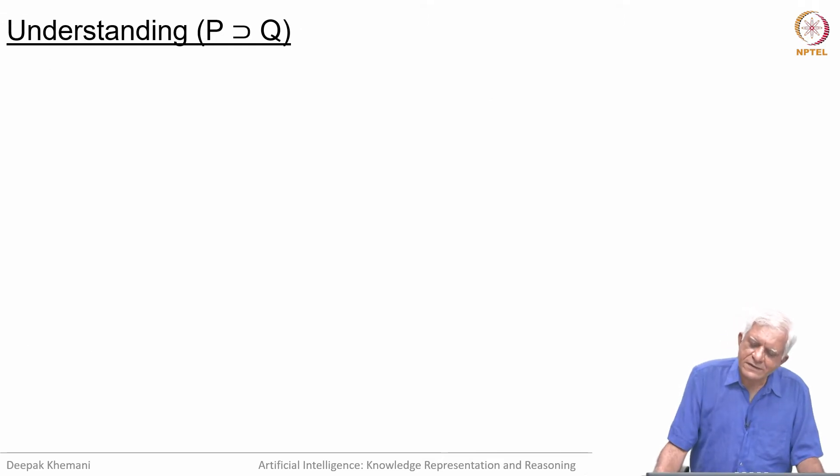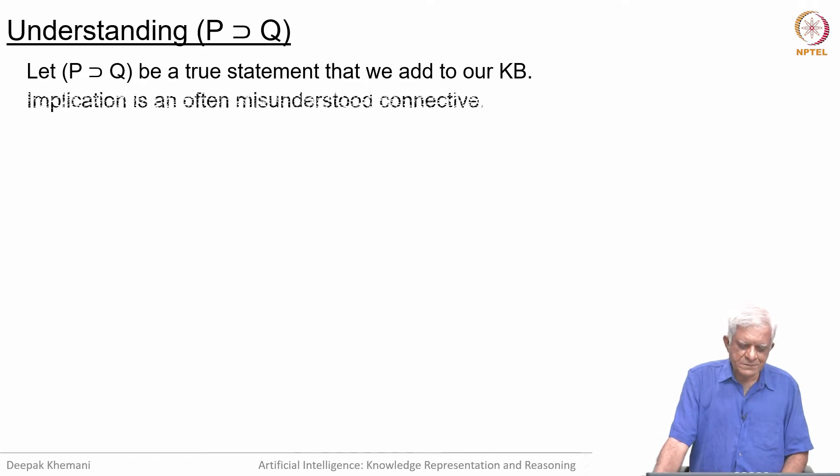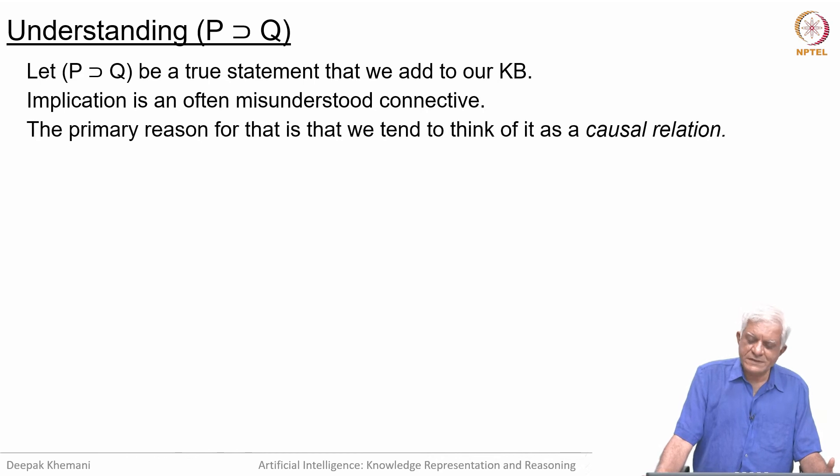Let us begin with the implication statement, because in a way it is the often misunderstood statement. Let us say that we have a statement P implies Q, which is added to our knowledge base. It is often misunderstood, and the primary reason for this misunderstanding is that we tend to think of it as a causal relation. We tend to think of it as saying that P causes Q, whereas logically speaking, that is not the case.